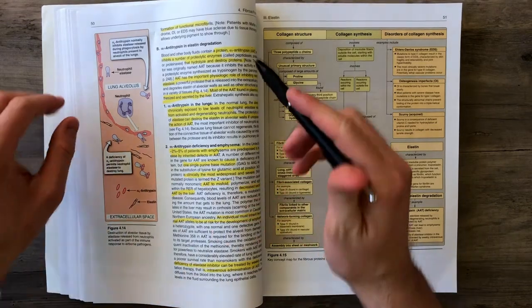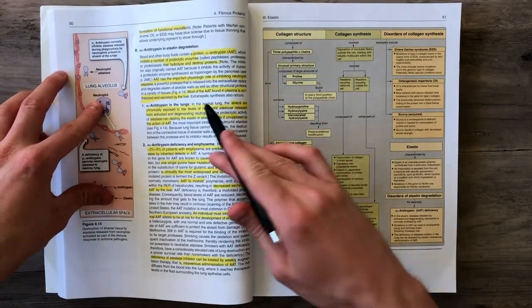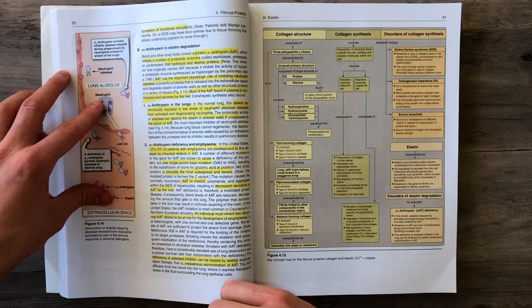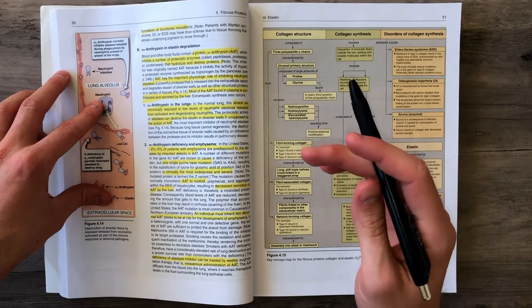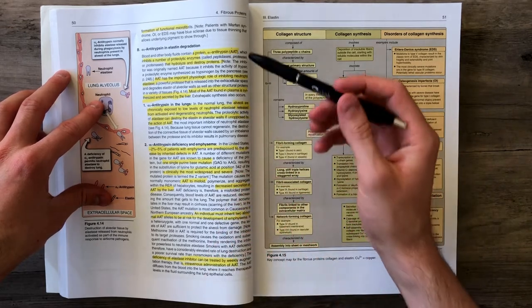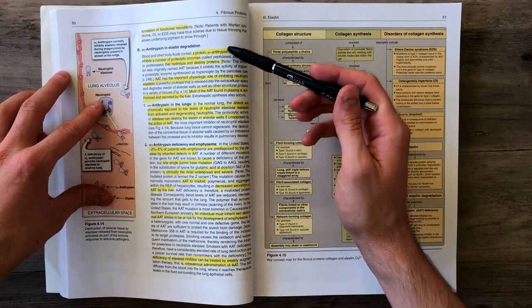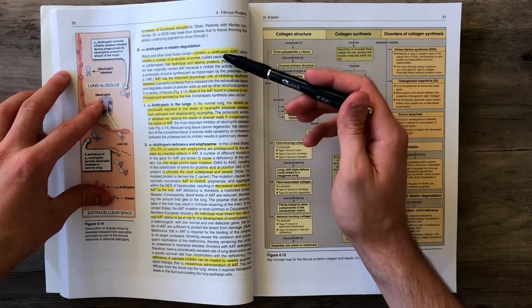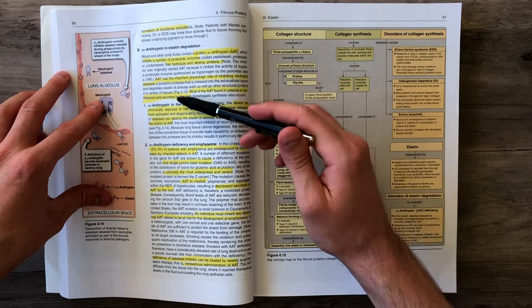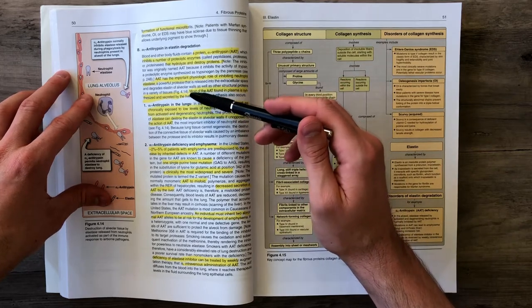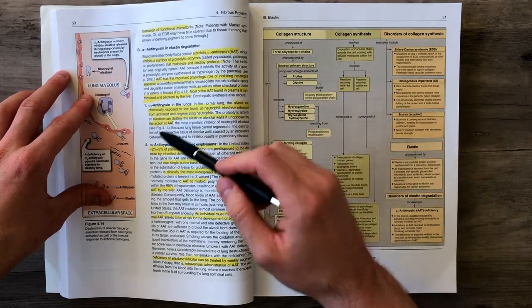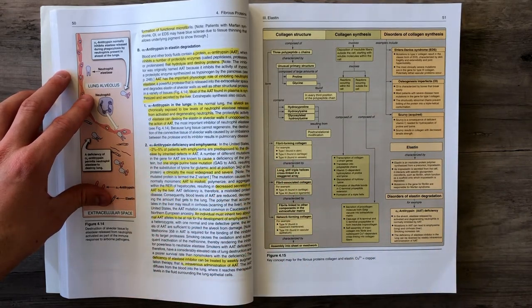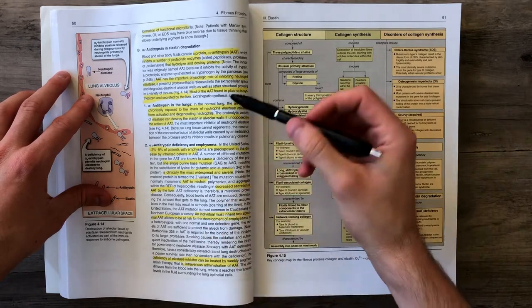Lastly, we have alpha-1 antitrypsin, which is involved with saving our elastic tissue. Elastin is broken down by several proteases and that is inhibited by alpha-1 antitrypsin. So alpha-1 antitrypsin helps elastin stick around longer. It is synthesized by the liver and has an important role in the lungs because neutrophils that get activated from bacteria release elastase.